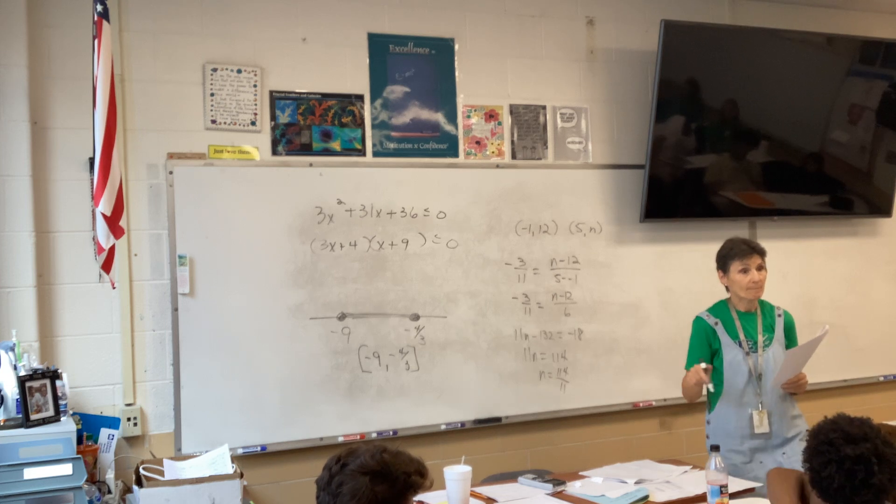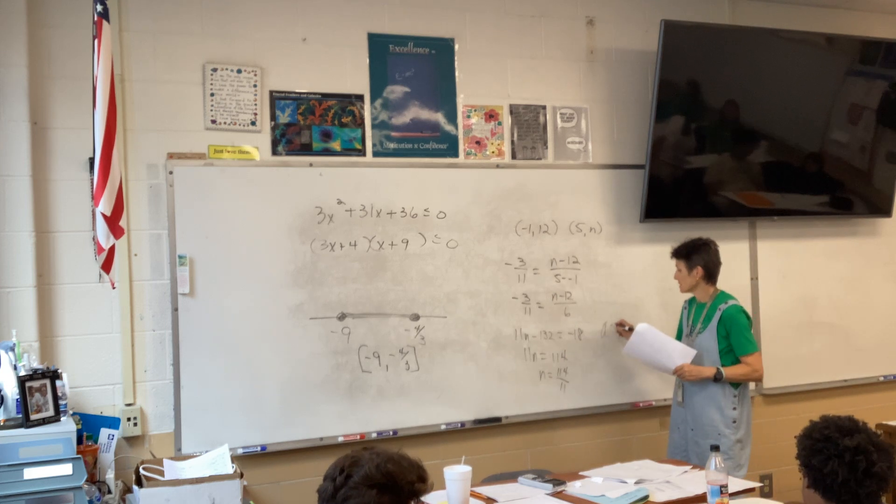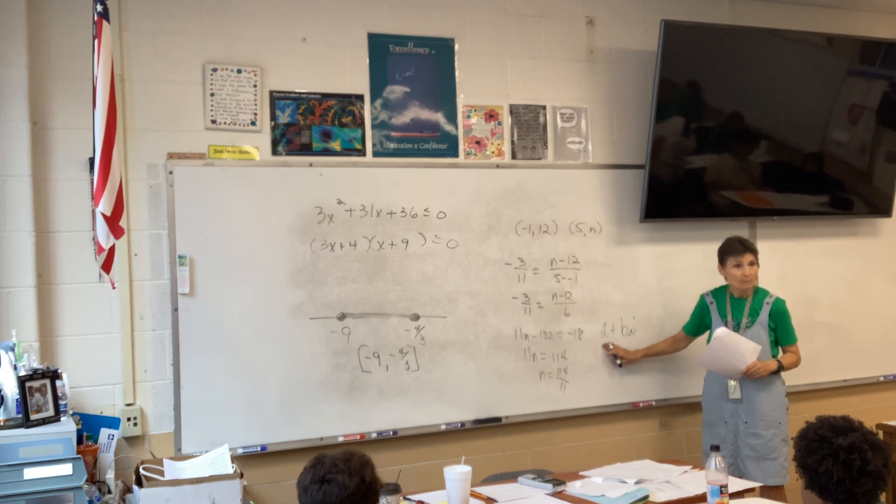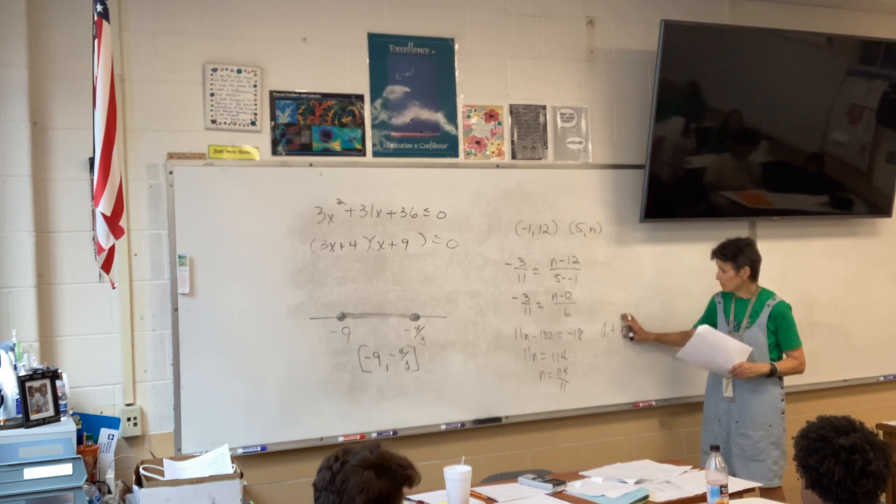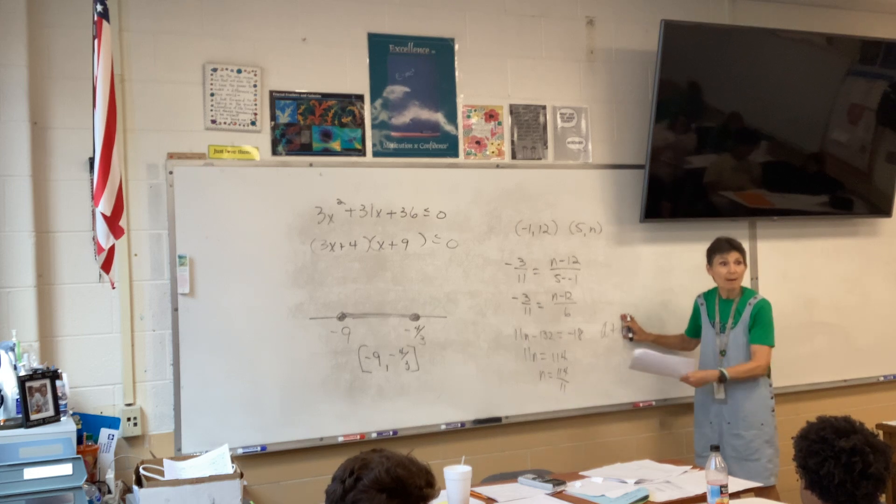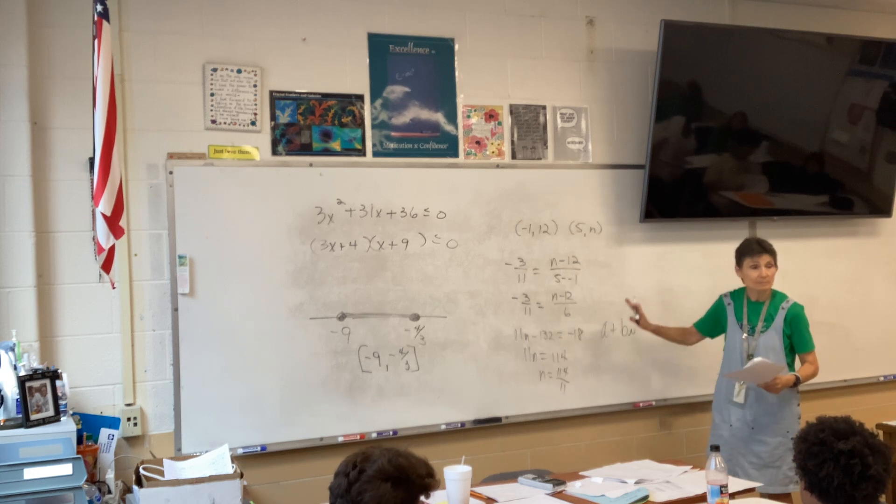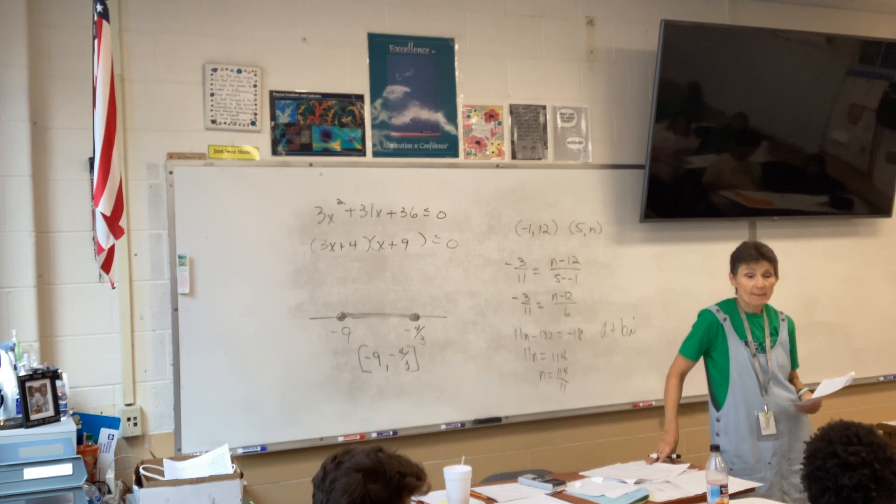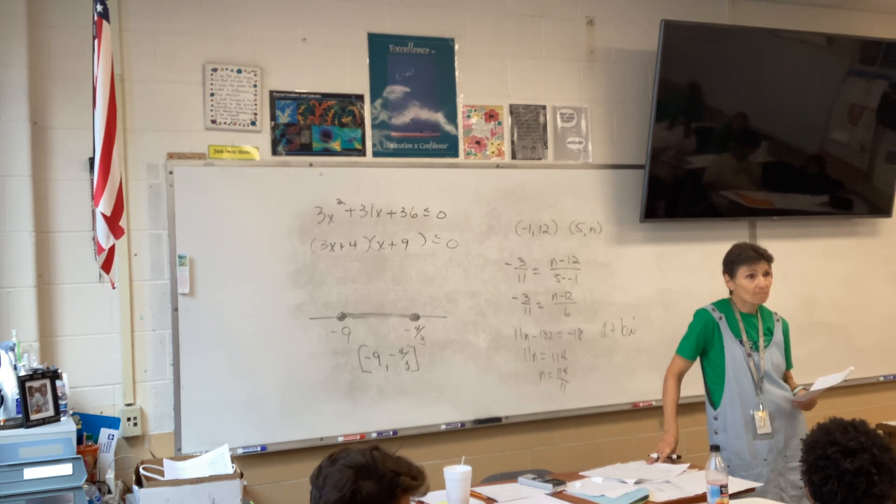A plus bi. Anything in the form A plus bi. So, if A is zero, then you just have bi. If B is zero, then you just have A. So, is every number a complex number? Yes. Why do they make complex numbers? It's everything.